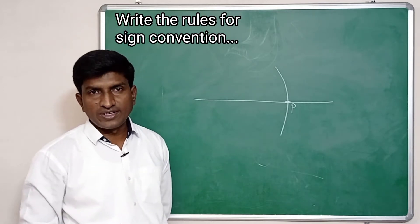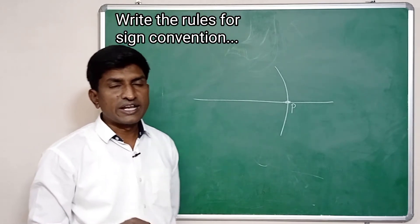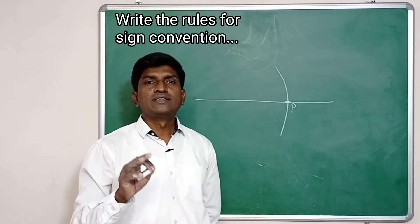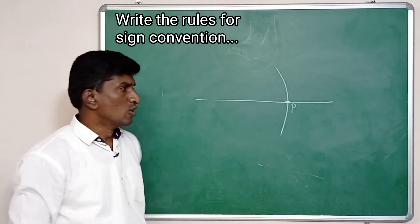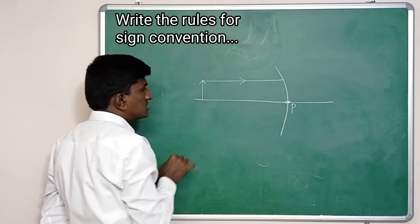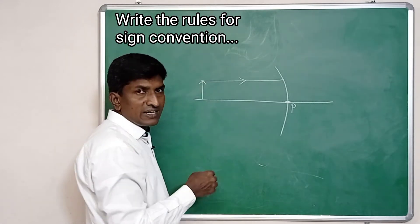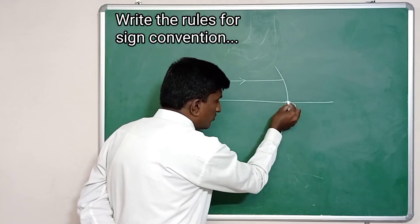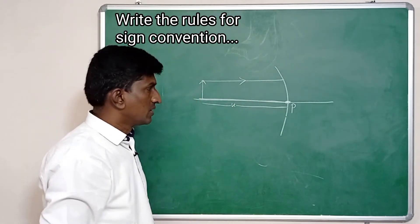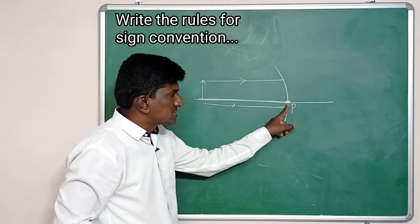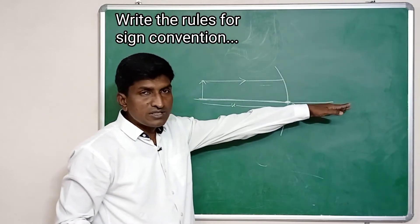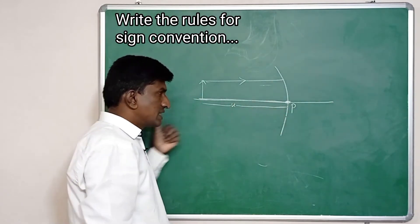The second sign convention: the distance measured in the direction of the incident light ray is taken as positive. If the distance is measured opposite to the incident light ray, then that value is taken as negative. For example, here this is the direction of the incident light ray. The object is situated here, and to measure its distance we start from the pole and measure in this direction.